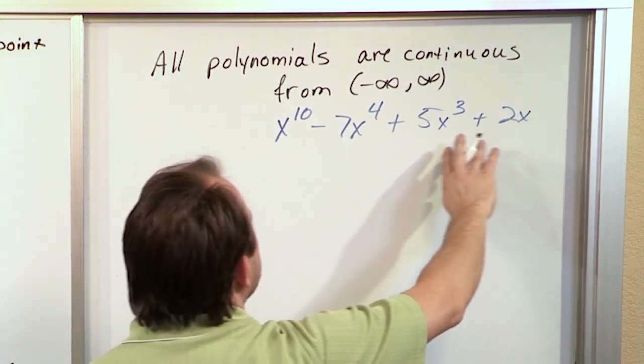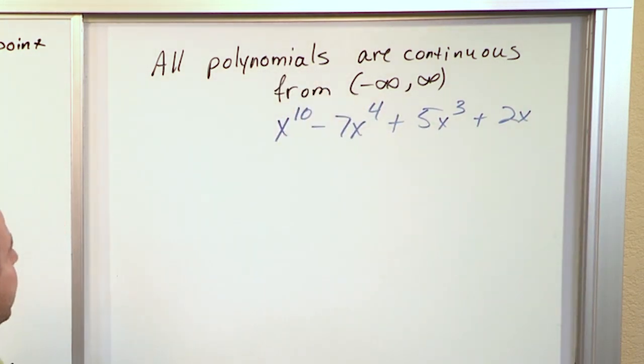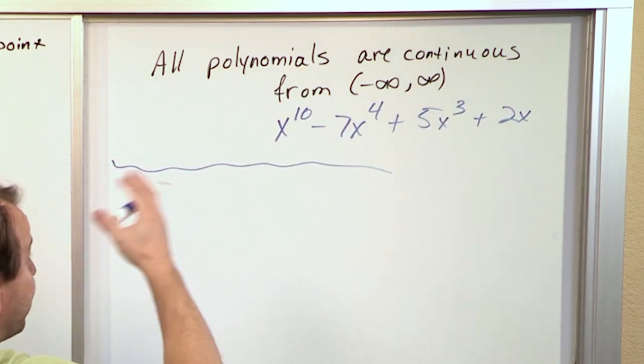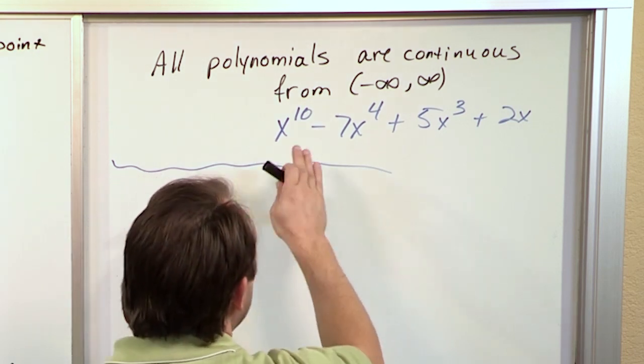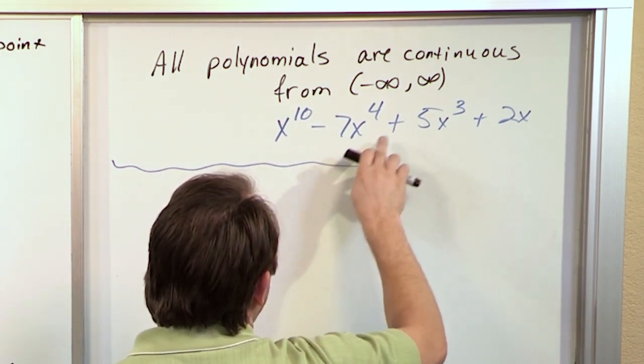You can have x to the 10th minus 7x to the 4th plus 5x to the 3rd plus 2x, whatever. Any polynomial you can come up with, you'll automatically know it's continuous. We're not going to prove that. That's something that mathematicians have automatically proven using limit theory, but it's very useful because then you know if you want to take the limit of this thing, you can just plug in the value.